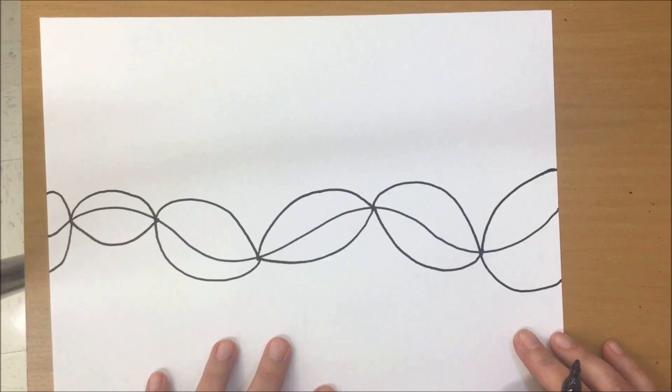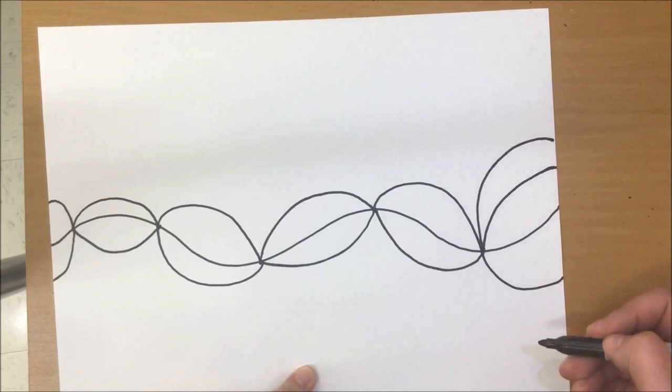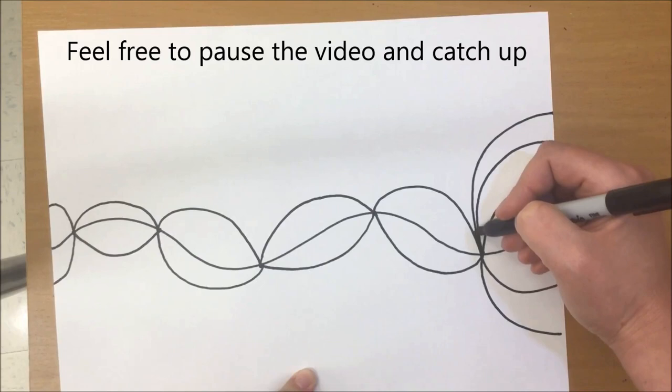To make the tunnels, you want to go back to the crease every time. We start at the crease and we just rainbow our line out to the edge. Back to the crease, rainbow our line out to the edge. Each time going back to that crease.